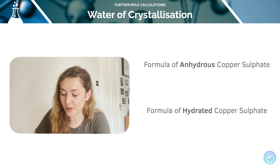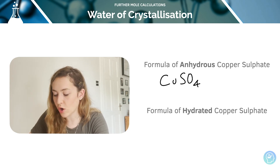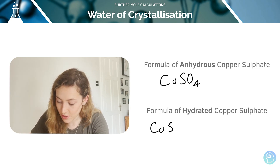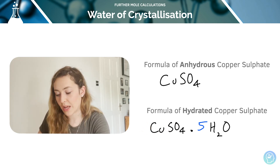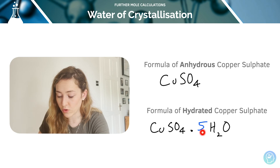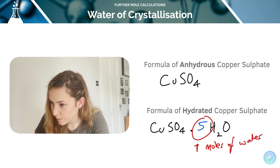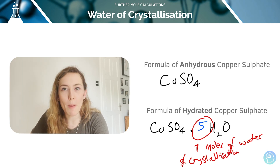The salt has two different formulae depending on whether it's anhydrous or hydrated. Anhydrous copper sulfate is CuSO₄. Hydrated copper sulfate is CuSO₄·5H₂O — meaning for every CuSO₄ unit there are five molecules of water in the structure, so five molecules of water bound per mole of copper sulfate.